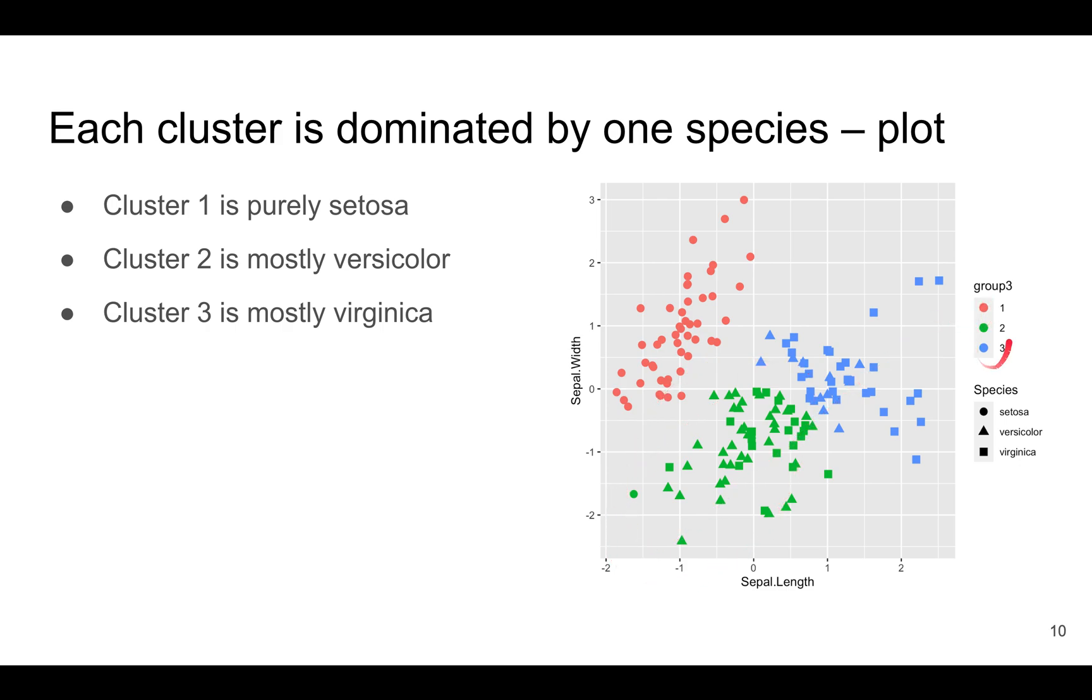By the way, here I'm using colors to denote the clusters, and I'm using shapes to denote the species. So it's not the same as the previous plot. Cluster two is mostly versicolor, and cluster three is mostly virginica.